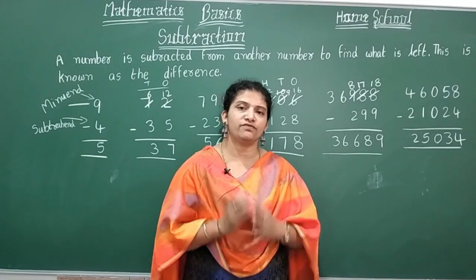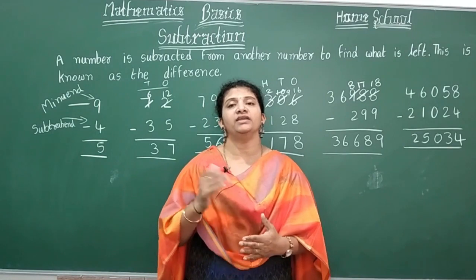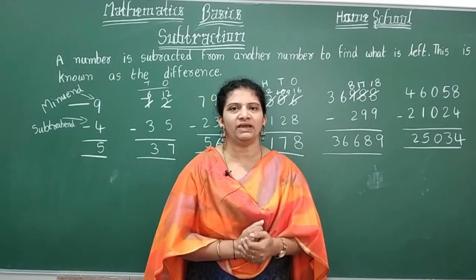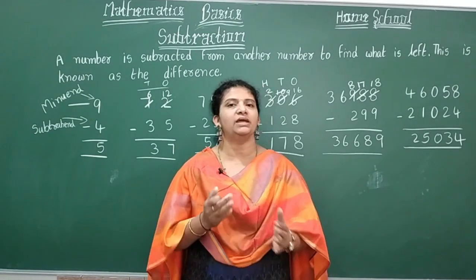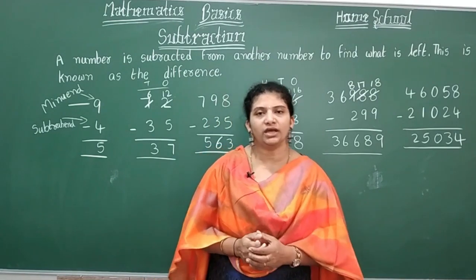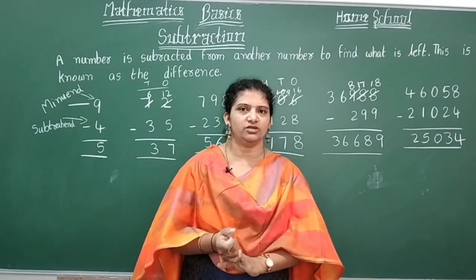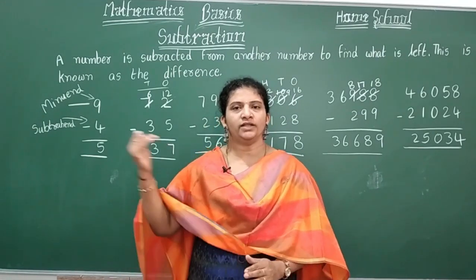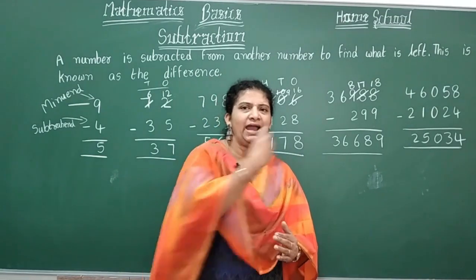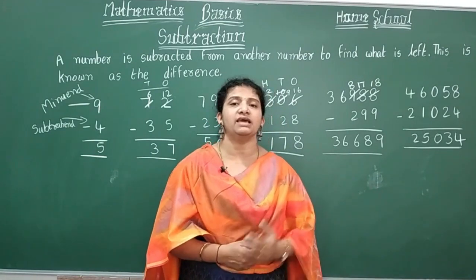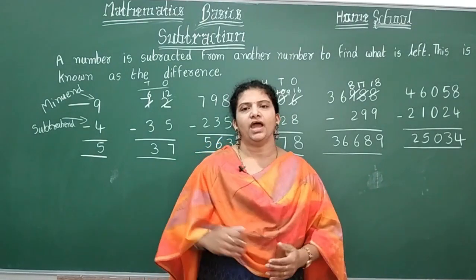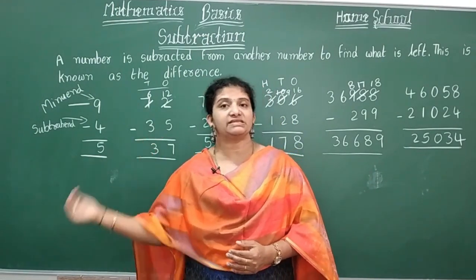Remember two important rules: if you subtract zero from any number, the number stays the same — for example, five minus zero equals five. If you subtract a number from itself, you get zero — for example, five minus five equals zero. Also, when you subtract a number from a given position, the result is called the preceding term; when you add, the next term is called the succeeding term.